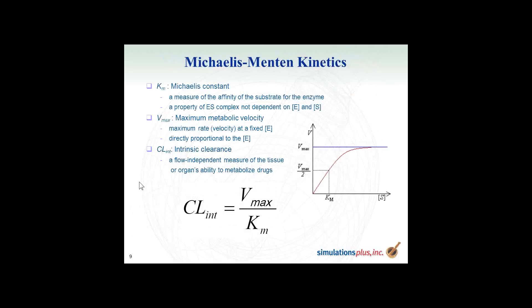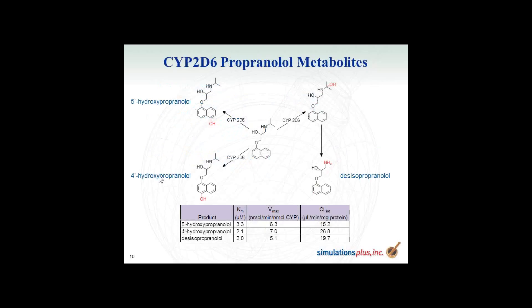We also predict Michaelis-Menten kinetics: KM, Vmax, and clearance for the sites of metabolism. Here's an example from the literature for propranolol — we have the three sites of metabolism and then KM, Vmax, and clearance. We gather that data from the literature and created three models to predict these various kinetic parameters. Steve used the clearance predictions in his presentation.